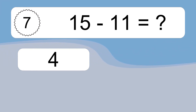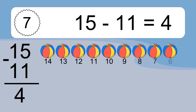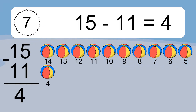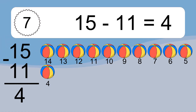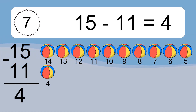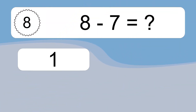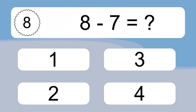15 minus 11 equals what? 15 minus 11 equals 4. Let's count it: 14, 13, 12, 11, 10, 9, 8, 7, 6, 5, 4.